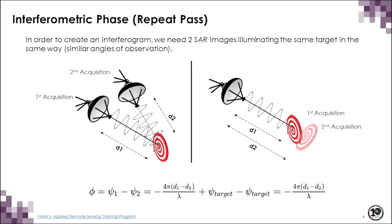The figure on the right shows the sensor located in the same position for both acquisitions, and now the target undergoes movement — surface deformation — causing the distance between the waves to be different between acquisition 1 and acquisition 2. We can relate the difference in distance between the waves with the interferometric phase through the equation: 4π times the difference in distance over lambda equals the interferometric phase.